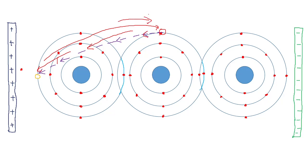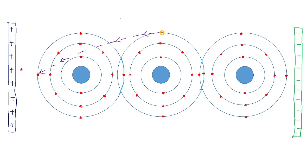In the next figure, the electron that was in the second atom has come to the first atom's position, and the hole has moved to the second atom's position. This means holes travel in the direction opposite to the flow of electrons — electrons travel one way, holes travel the other way.